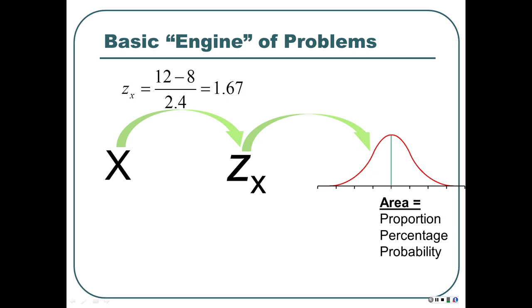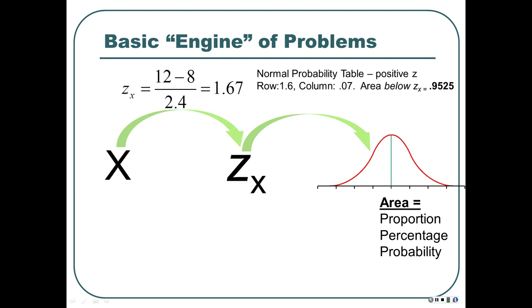So what do we do with that number? We look up in the table in the back of the book — the normal probability table. We need to look in the positive z table since this is a positive z-score. We find the row labeled 1.6, because that's the first part of our z-score, and the column 0.07, because that's the last part. The area below z of x is 0.9525. The table tells us this area below.